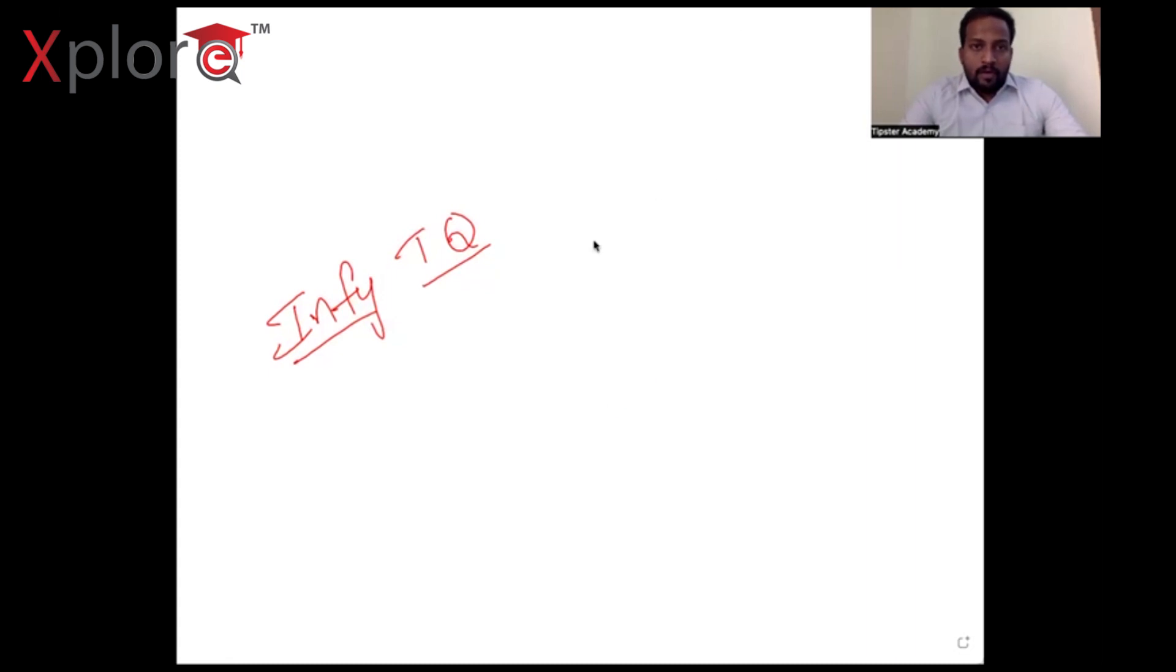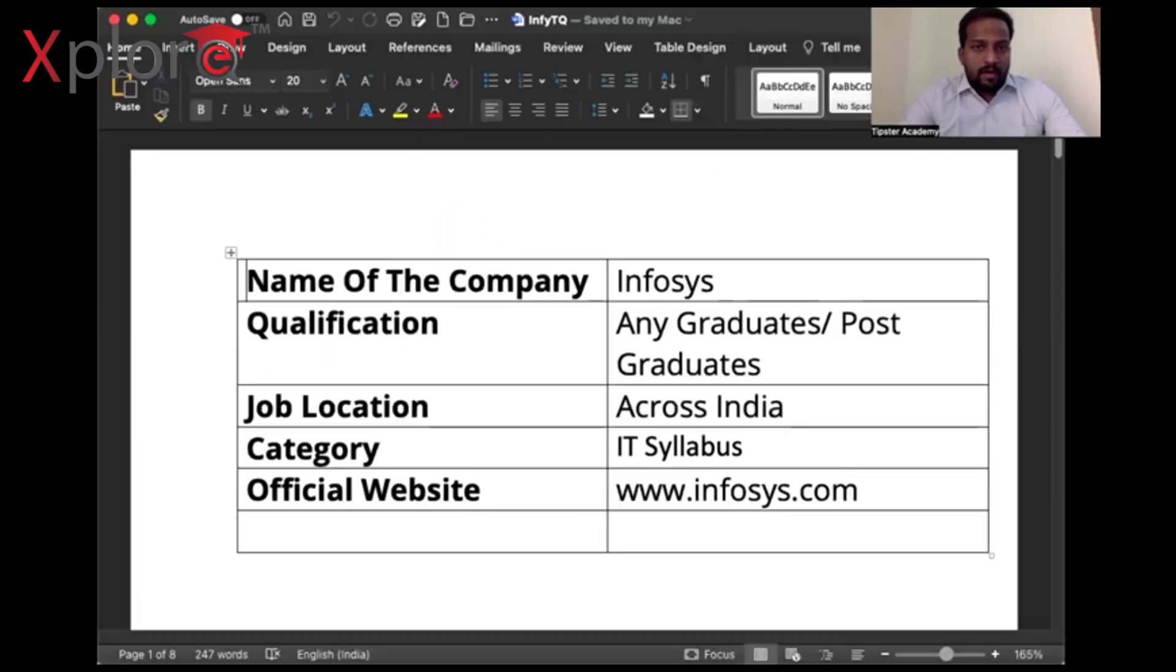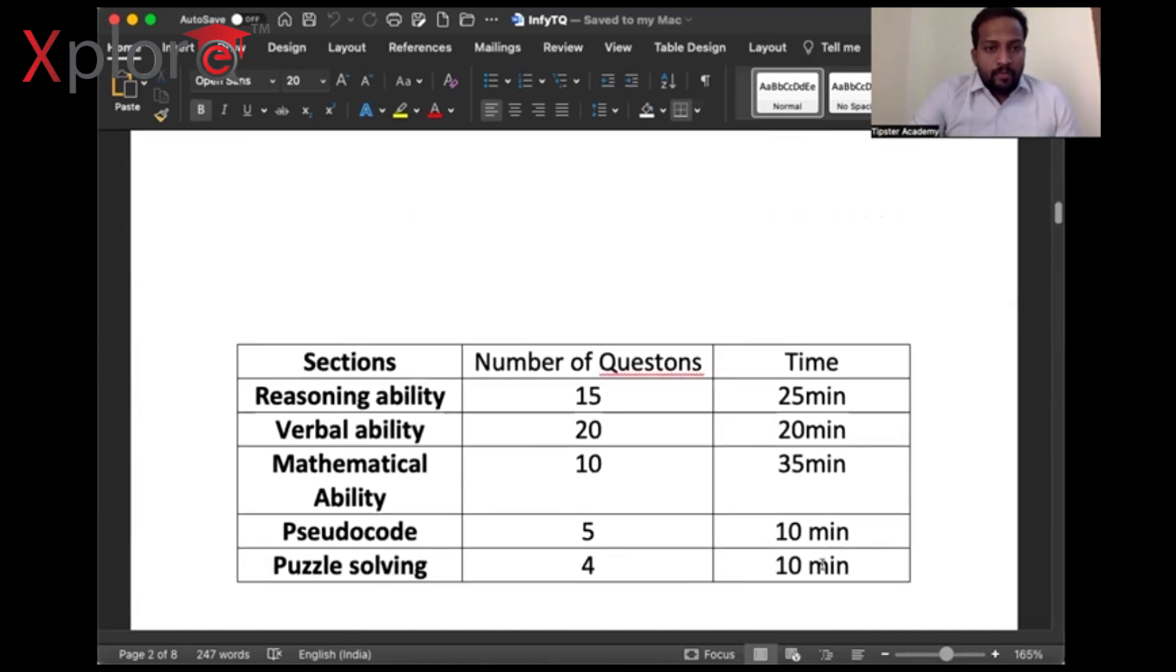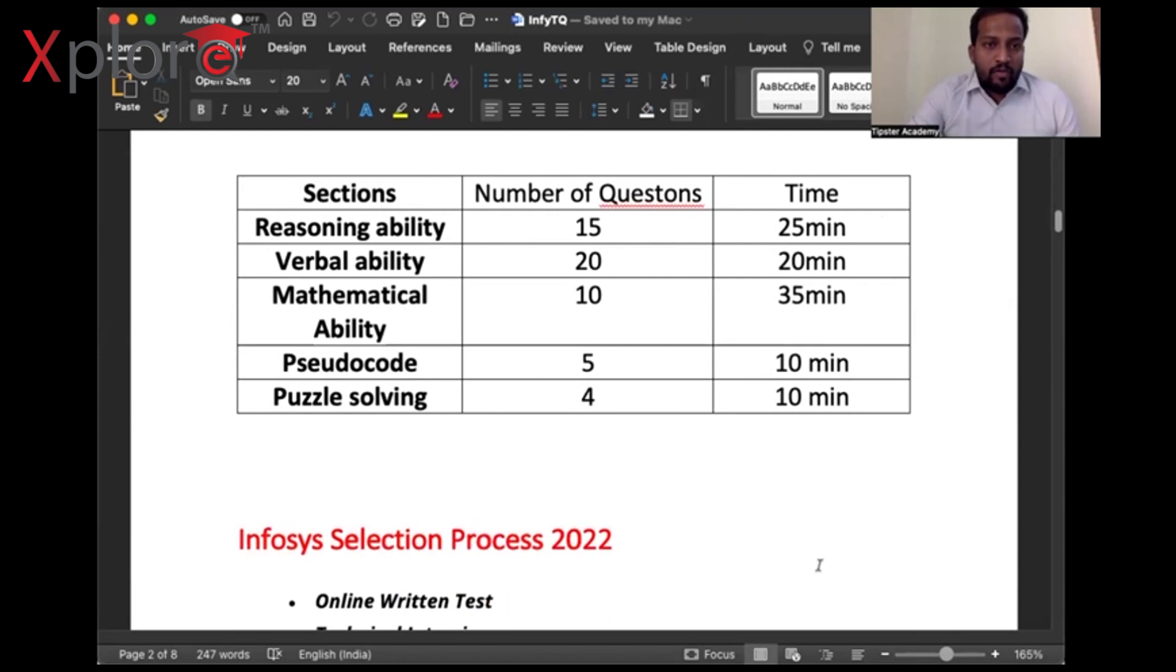Hope everybody can see my screen. As we can see, the company is Infosys. Qualification is any graduate or postgraduate can apply. Job location is across India, pan India. Category is IT services. The official website is www.infosys.com where you can visit and gain more knowledge.